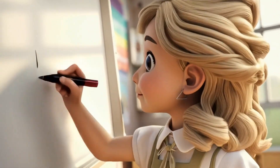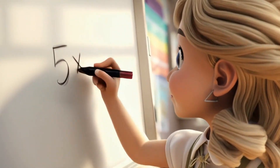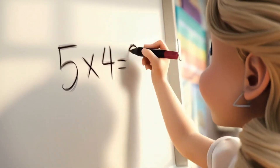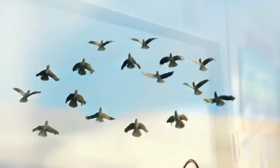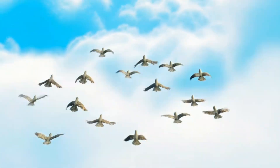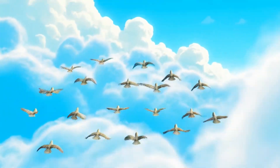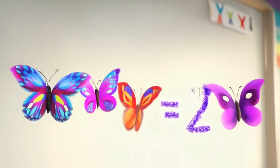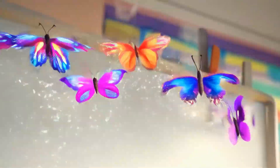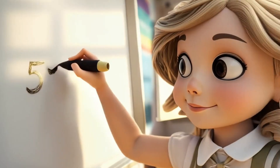Five times four is twenty. Twenty birds are flying plenty. Five times five is twenty-five. Twenty-five butterflies come alive.